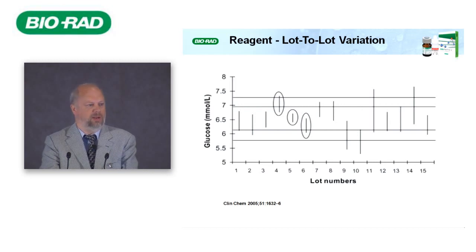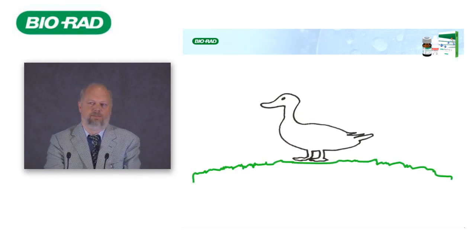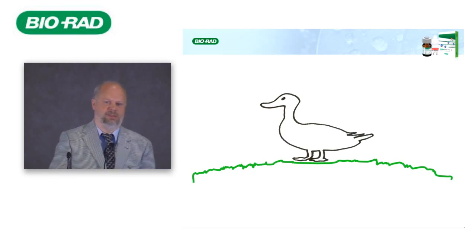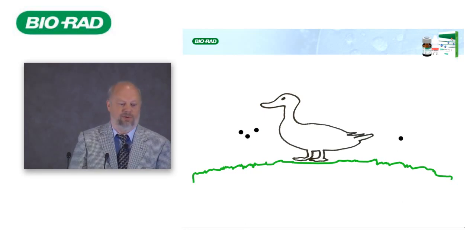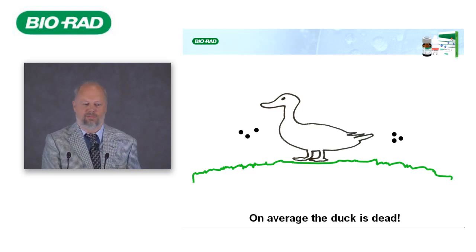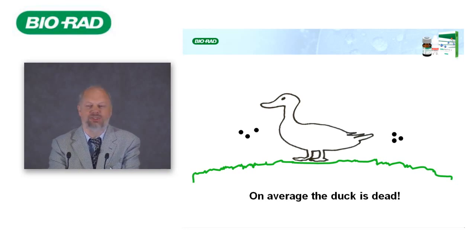Lot-to-lot variation: here is an example showing glucose measurement across different lots from one manufacturer. You see that with a lot change, your quality control target value may also change — and this is true not only for QC materials but for patient material as well. The way we do things in the laboratory might be like this: I'm shooting at the duck, and after six shots, our conclusion — on average, the duck is dead.